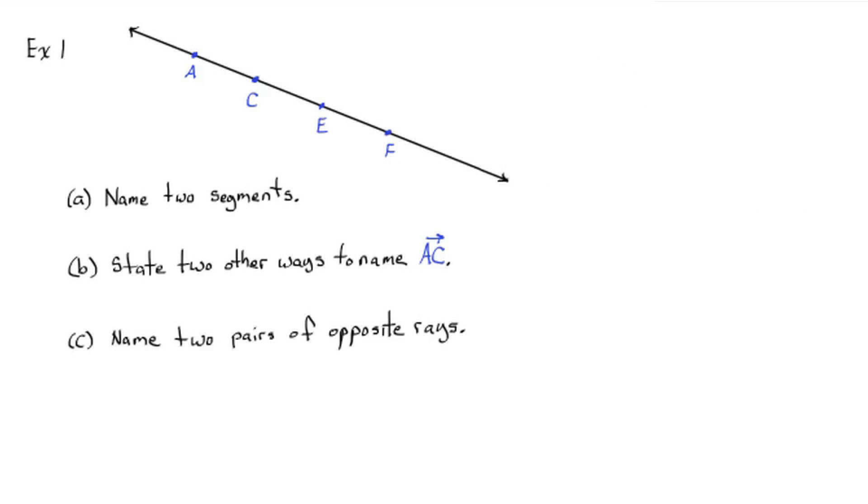Okay, so how did you do? Two segments. Segment AC, segment CF, segment EA, segment FA. For the next part two other ways to name ray AC, we could say ray AE or ray AF. Just make sure your endpoint is A there. And two pairs of opposite rays, we could say ray CA and ray CE or ray EA and ray EF. Both have to start with the same endpoint and go in opposite directions.